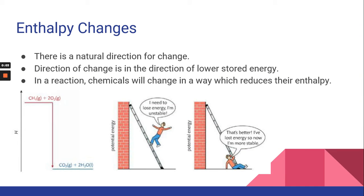Nature likes low energy, so reactions can occur because they would produce products with lower energy. There's a natural direction of change — we want low stored energy. Most reactions that are spontaneous are exothermic because the reactants have more energy than the products, so they tend to be exothermic.